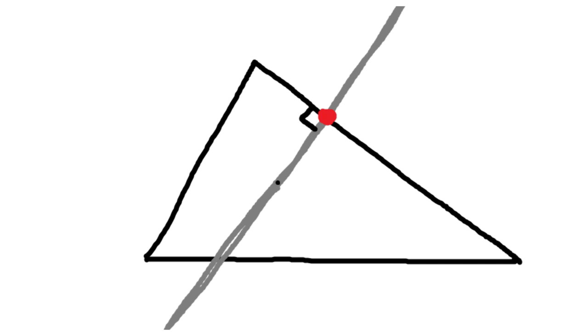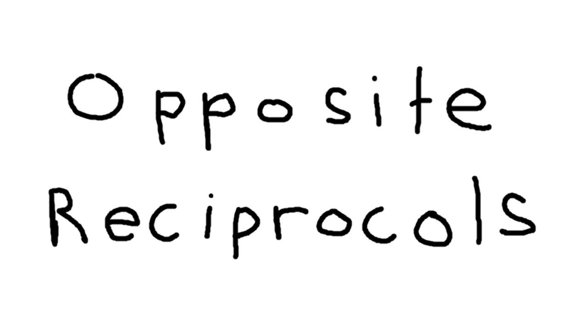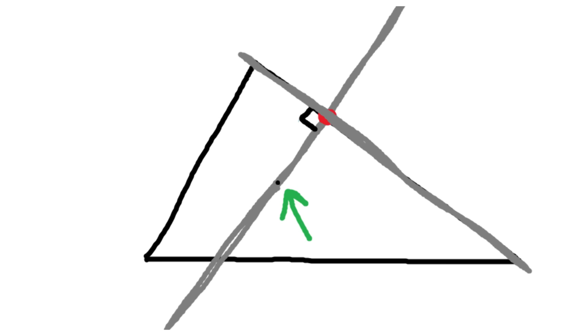For the other line, we already know it passes through the incenter, so we just need to know the slope. And since we know this line is perpendicular to the edge, it means their slopes are opposite reciprocals. So this line's slope is negative 1 over the edge's slope.